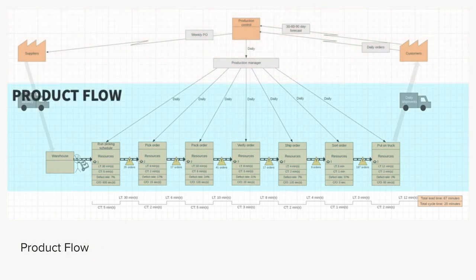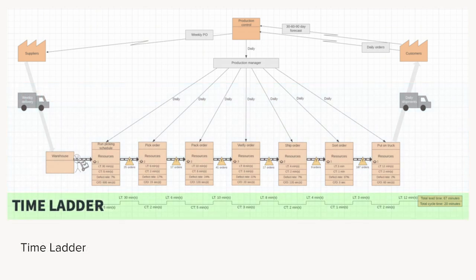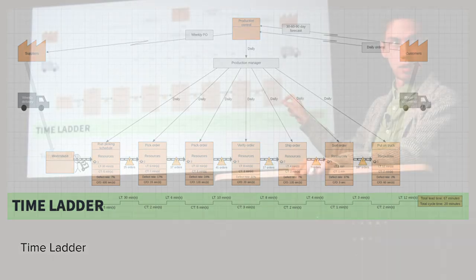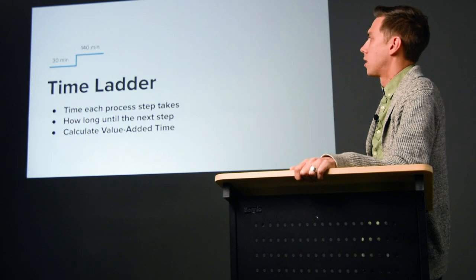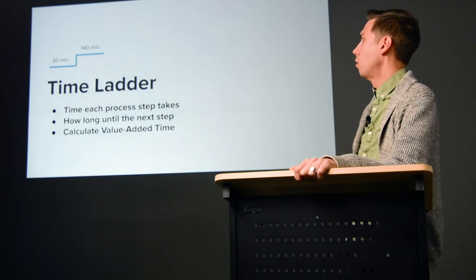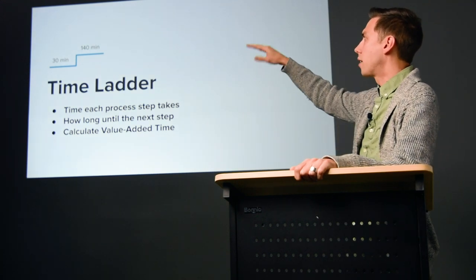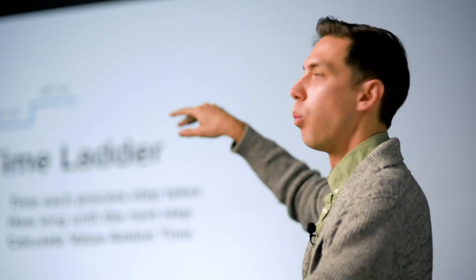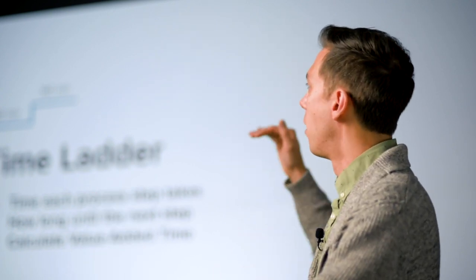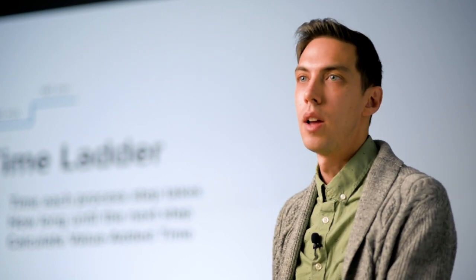Then there's the product flow, and the time ladder — which is really important. The time ladder documents the cycle time for each step and the time between steps, showing what is value-added time versus non-value-added time. You add it all up, apply a formula, and you can determine something like: 30% of our time is spent creating value and the rest is not — giving you a clear opportunity for improvement.